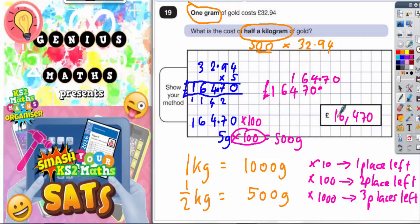Just to recap, there are 500 grams in half a kilogram, so we need 500 lots of this £32.94. If you do 5 lots, you get £164.70. So you make that 100 times bigger. We move the digits two places forward. So you end up with £16,470.